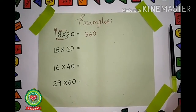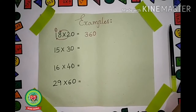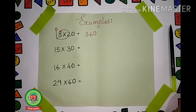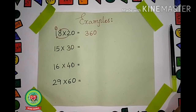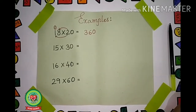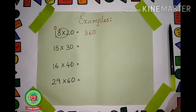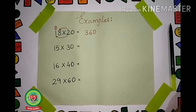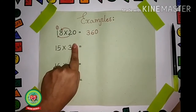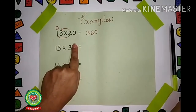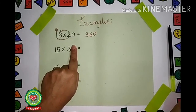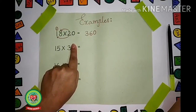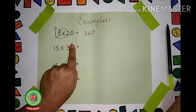15 × 30. What is the number given to you? 15 × 30. As I told you in the first question, you have to hide the zero with your finger. After hiding the zero, what can you see? 15 × 3.